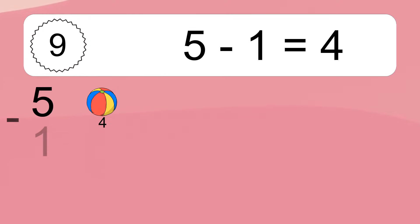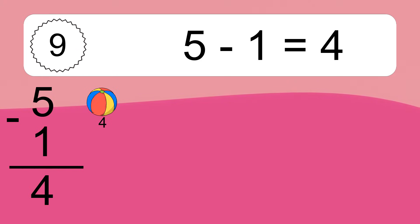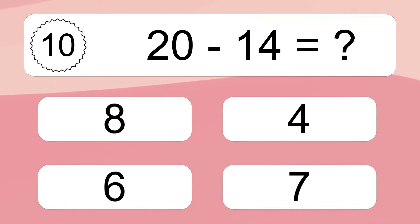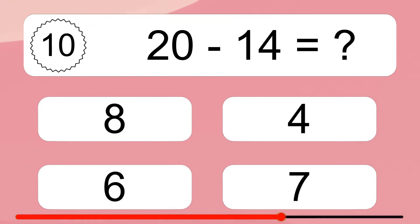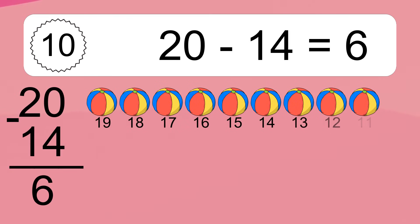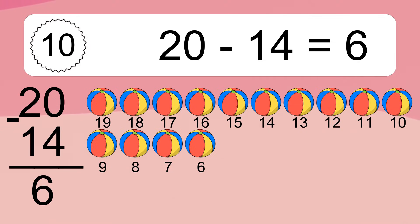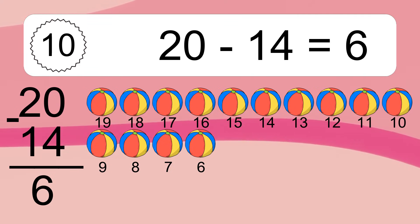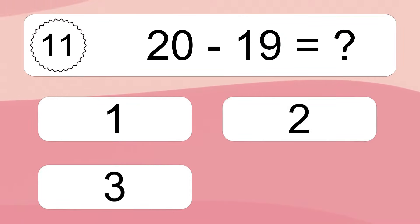5 minus 1 equals what? 5 minus 1 equals 4. Let's count it: 4. 20 minus 14 equals what? 20 minus 14 equals 6. Let's count it: 19, 18, 17, 16, 15, 14.